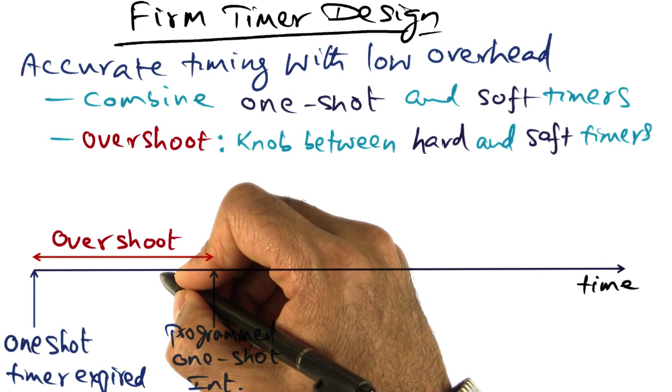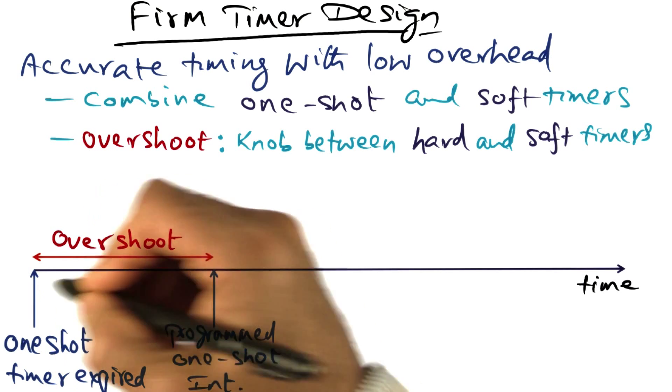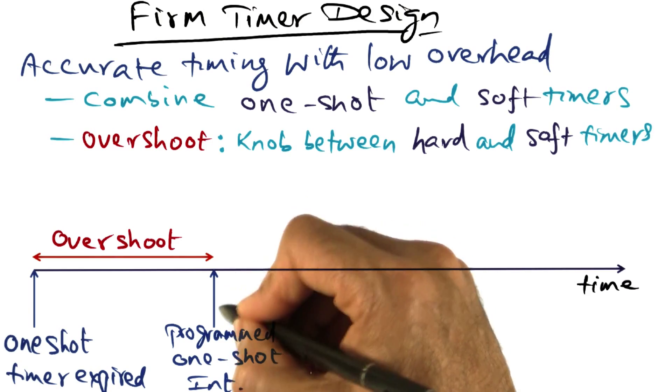What that overshoot parameter is allowing you to do is, even though this is the point at which the event happened, the one shot timer is programmed to go off at this point.